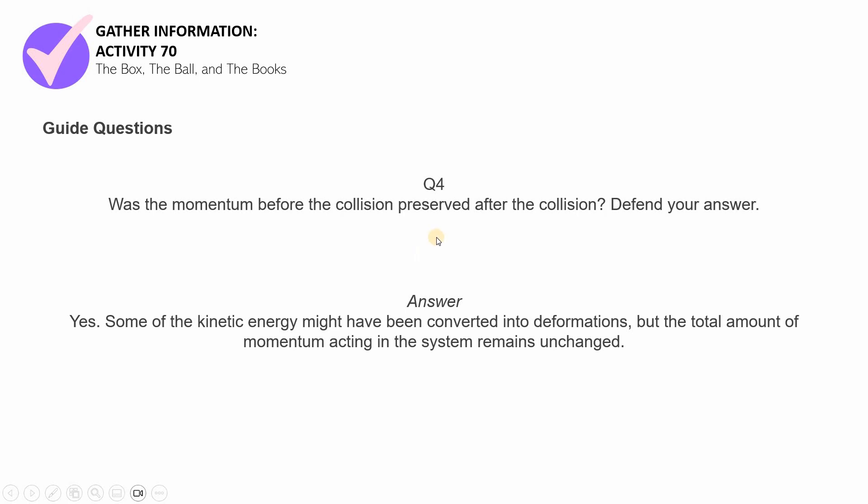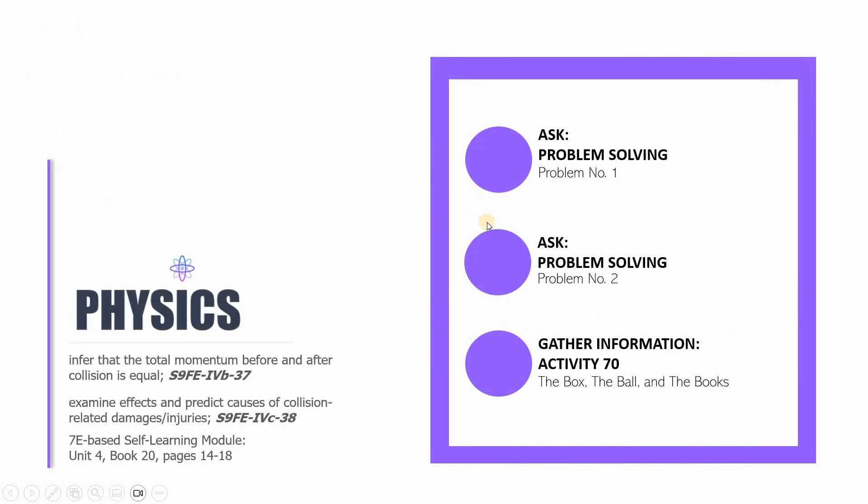That is it. For the last question in gather information activity 70, the box, the ball, and the books. All right. Now that we're done with this session, I hope that you will stay tuned for more examples, for more activities coming your way in Physics 9. This is the 17th session of Physics 9. I'm hoping that I'll see you in the next video lesson then.